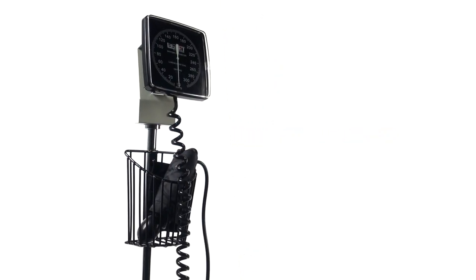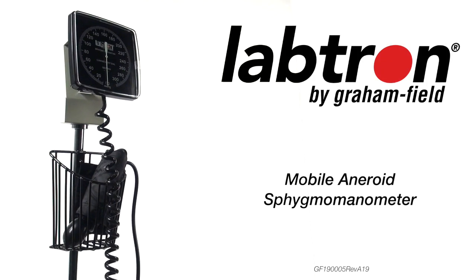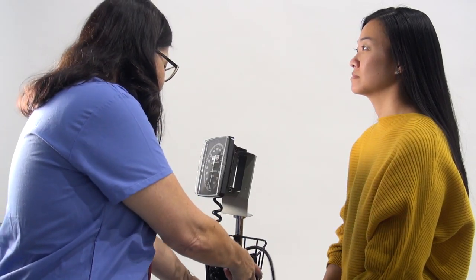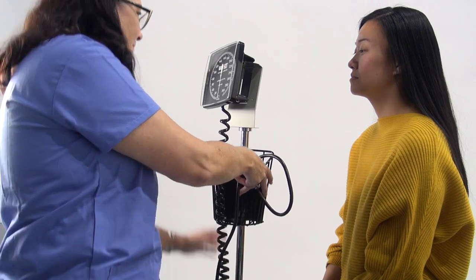The Labtron mobile aneroid sphygmomanometer is designed to facilitate easy and convenient blood pressure reading. The gauge on the mobile sphygmomanometer is mounted onto the height adjustable mobile base.